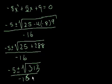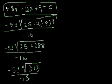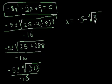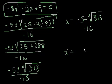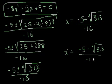So if that is the case, we've got it in completely simplified form, and we say there are two solutions, two x values that will make this equation true. One of them is x is equal to minus 5 plus the square root of 313 over minus 16. And the other one is x is equal to minus 5 minus the square root of 313 over minus 16.